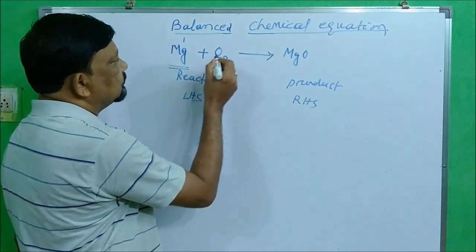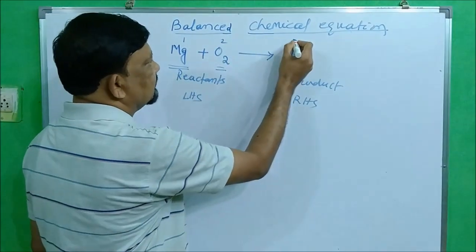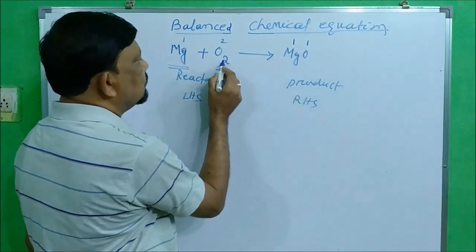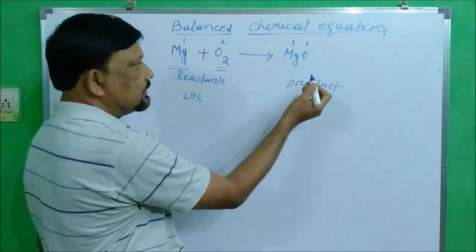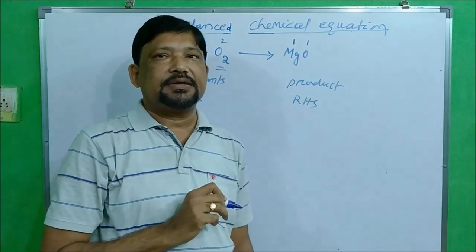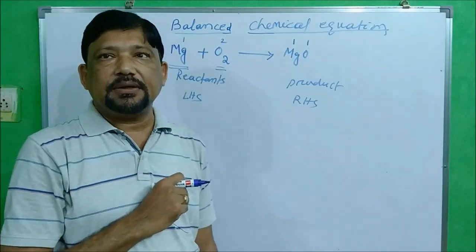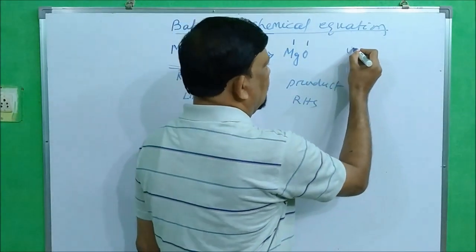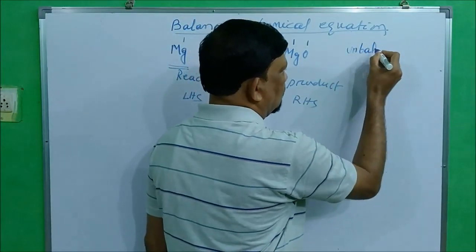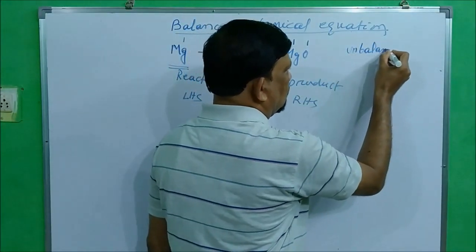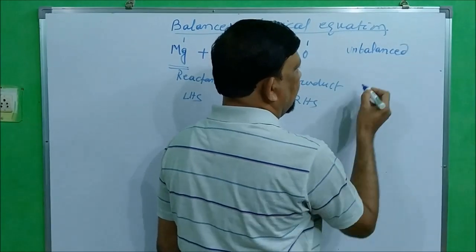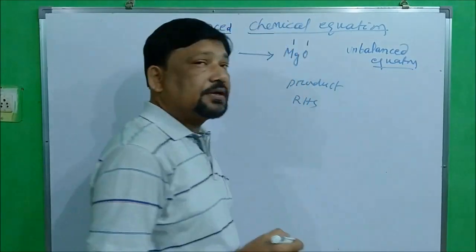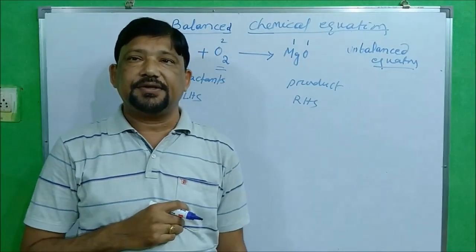Let's examine: magnesium — one on each side. Oxygen — two on the reactant side, but one on the product side. So one oxygen is less on the product side. This is not a balanced equation; rather, we say this is an unbalanced equation.